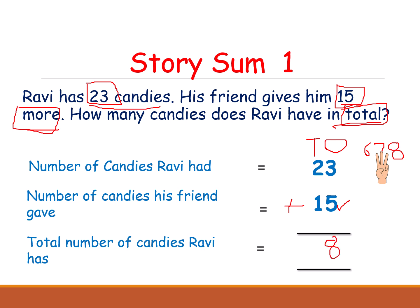Now in the tens place we have 2 and 1. 2 is the biggest number. Keep 2 in your mind and open 1 finger. 2 plus 1 — after 2 is 3. So the total number of candies Ravi has is 38.